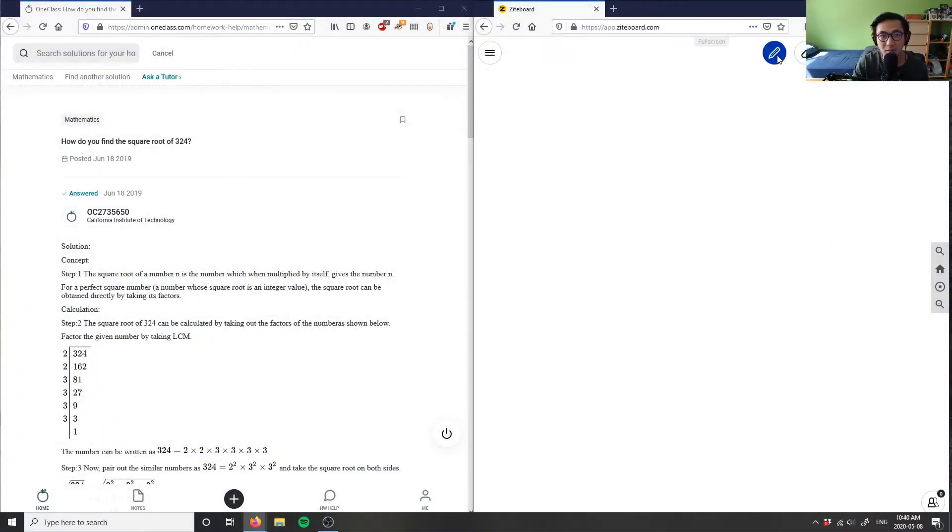Number 10 is asking us how do you find the square root of 324? So square root of 324. When we talk about the square root here, we're talking about this symbol. This symbol here denotes the square root of 324, and 324 just sticks on the inside here.